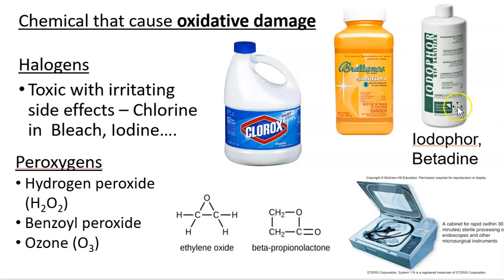Different halogens include bromine, often used in hot tubs, and various iodine-containing compounds. Peroxygens include ethylene oxide, hydrogen peroxide, and ozone — very strong oxidizing chemicals. A chemiclave is the equivalent of an autoclave but uses gaseous versions of these chemicals. Hydrogen peroxide gas is pumped in with surgical instruments, penetrating everywhere and oxidizing any organic molecules to sterilize the instruments given sufficient exposure time.